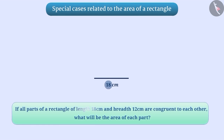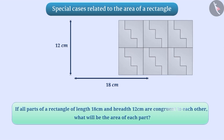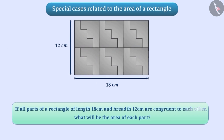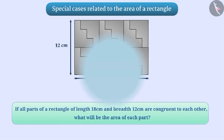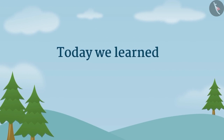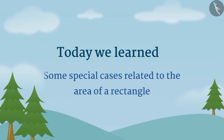Now find out for yourself if all the parts of the rectangle of length 18 cm and breadth 12 cm are congruent to each other, and what will be the area of each part. Today, we learned about some special cases related to the area of a rectangle.